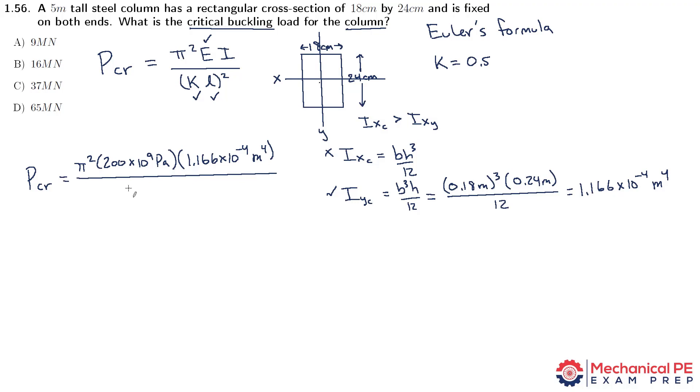Divided by the quantity k, 0.5, times l, the unbraced length, 5 meters. That's a 5, not a 6. Sorry about that. And that quantity is squared. That all works out to 3.67 times 10 to the 7th newtons, which is approximately 37 mega newtons, 37 times 10 to the 6th newtons. Answer choice C.